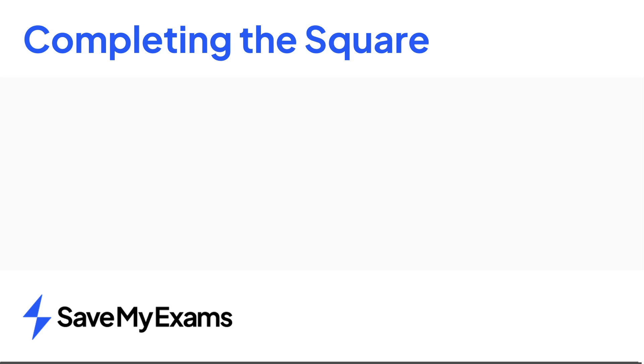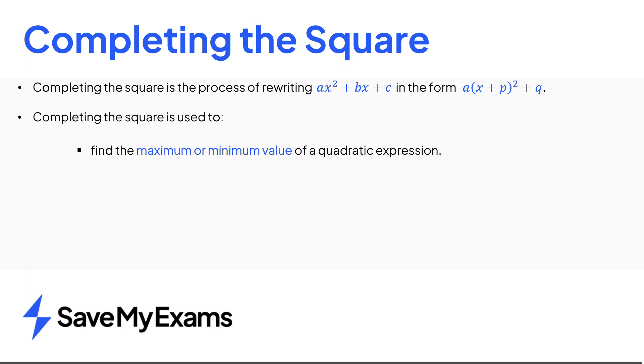In summary completing the square is the process of rewriting a quadratic from its general form to a form that only contains one x. Completing the square is used for finding the maximum or minimum value of a quadratic expression, finding the coordinates of the turning point of a quadratic graph and rearranging a formula which contains a quadratic expression.